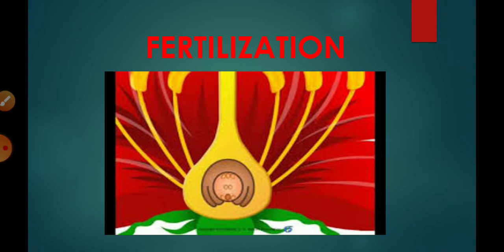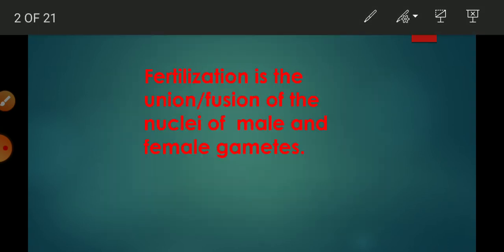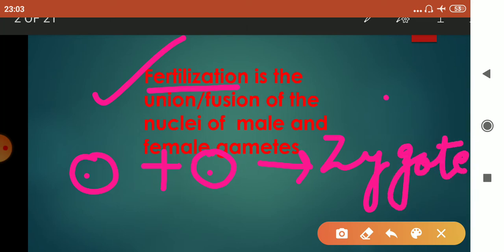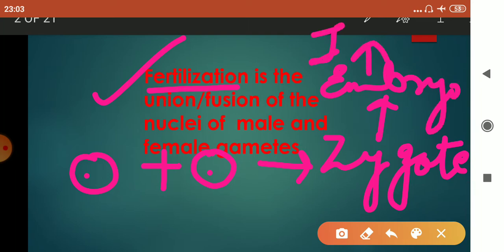I have explained pollination and now I'm going to start with fertilization. Fertilization is the union or fusion of the nuclei of male and female gametes — the fusion of male gamete with the female gamete. The resultant structure formed after the fusion of these two gametes is called the zygote. This zygote further develops into an embryo, and then this embryo forms the individual.